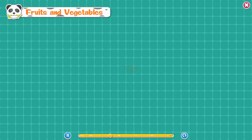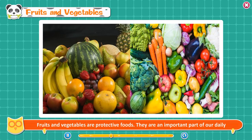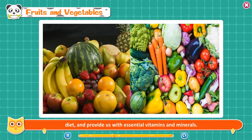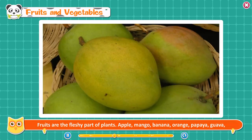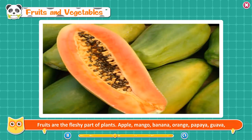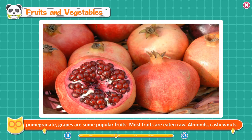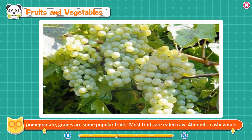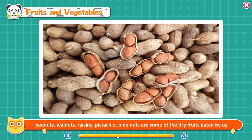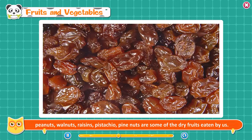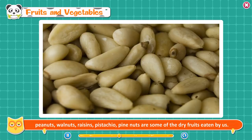Fruits and Vegetables. Fruits and vegetables are protective foods. They are an important part of our daily diet and provide us with essential vitamins and minerals. Fruits are the fleshy part of plants — apple, mango, banana, orange, papaya, guava, pomegranate, and grapes are some popular fruits. Most fruits are eaten raw. Almonds, cashew nuts, peanuts, walnuts, raisins, pistachio, and pine nuts are some dry fruits eaten by us.